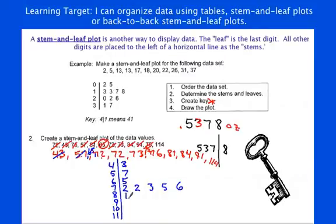For the 80s, I have 1 and 4. 90s, I've got a 1. And then 110s, I've got a 4. Notice, I just make sure that everything stays lined up vertically. That's one way to make sure it stays neat. And now I'm almost done. Not quite, though. I need a key.